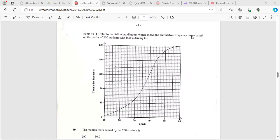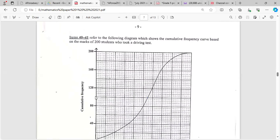Item 40 refers to the following diagram which shows the cumulative frequency curve based on the marks of 200 students who took a car driving test. The median score by the 200 students is - now the median is the middle, so what we have to do is find the middle.